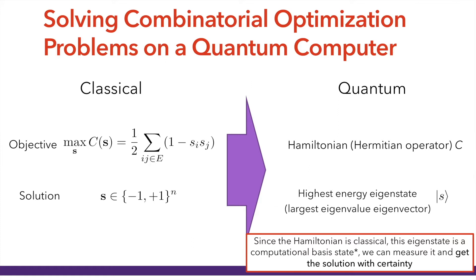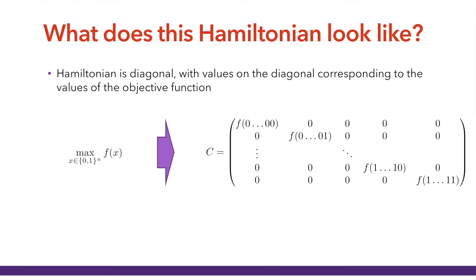For example, if our eigenstate is actually a linear superposition of computational basis states, the point is we can get this eigenvalue — the solution — with certainty, because if we can prepare this eigenstate, we're just going to sample the basis states that correspond to the solution. Now, what does this Hamiltonian look like? This Hamiltonian is diagonal, and the values on the diagonal correspond to the values of the objective function.